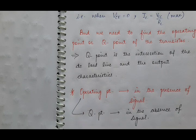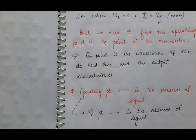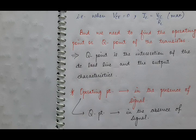So for the transistor to work properly in the active region, we need to find the proper operating point of the transistor. This operating point — when you apply any input signal for amplification purposes — that point is known as the operating point of the transistor. But as we are doing now, when no signal is being applied for amplification, at that time this operating point is known as the Q point of the transistor.